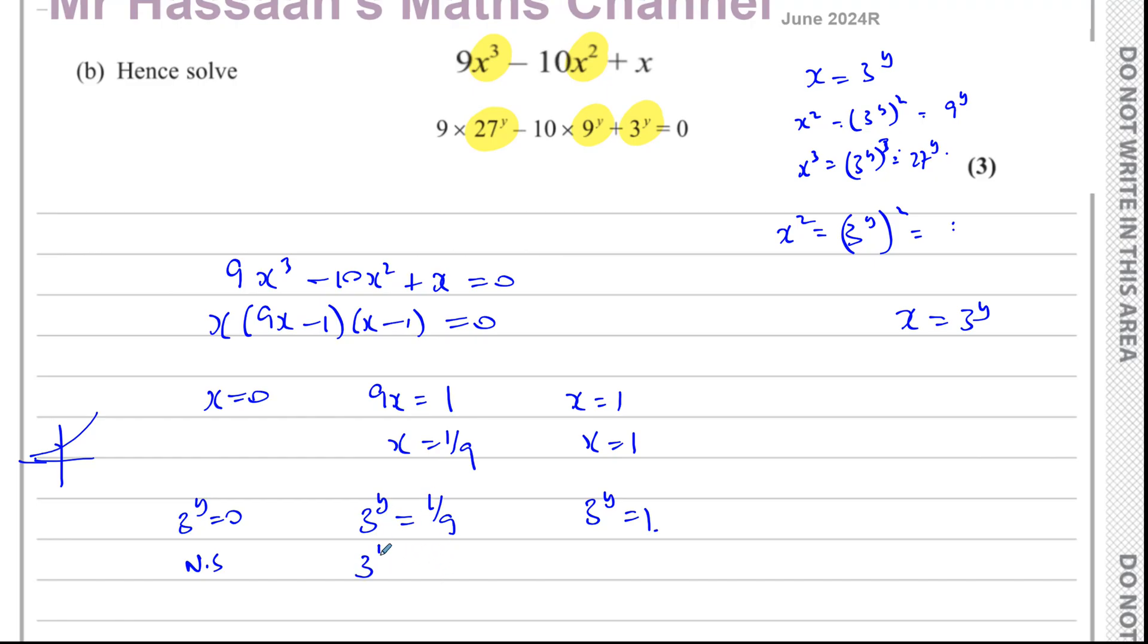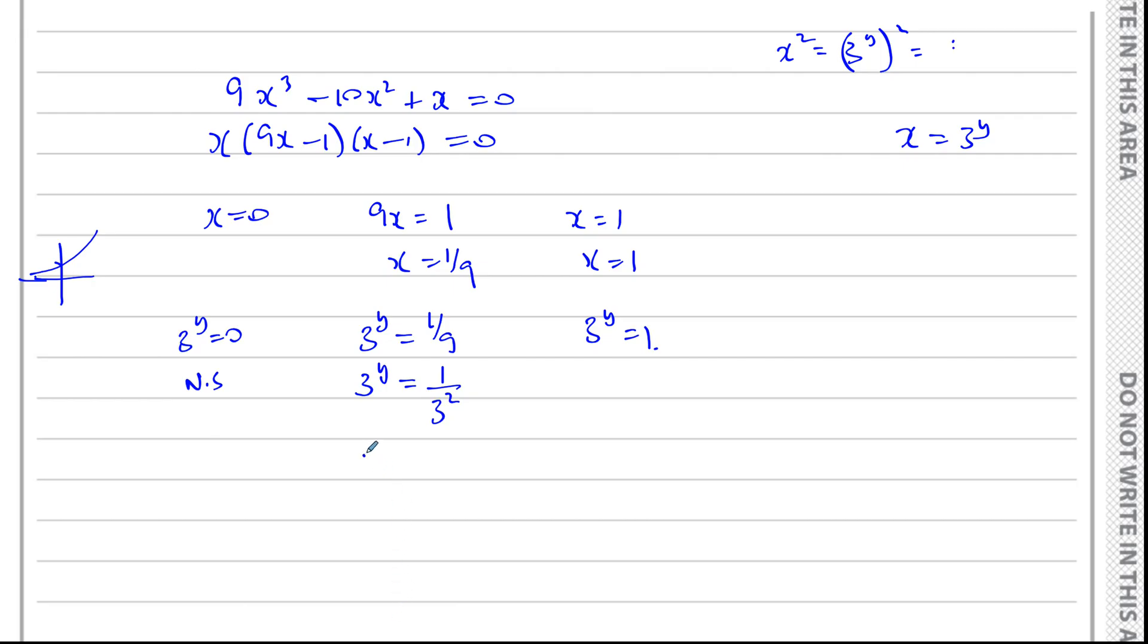And 3 to the power of y equals 1 over 9. We can solve this using exponential equations. We can write this as 3 to the power of y equals 1 over 3 squared. And we know that 1 over 3 squared is the same as 3 to the power of minus 2. So 3 to the power of y equals 3 to the power of minus 2. In which case, y is equal to negative 2. So when you're solving an exponential equation, you should always try to make the bases the same. So 3 and 9, you can see that they can be expressed both as 3 squared or 3 to the power of something. So this is 3 and this is 3 to the power of 2. And we know the laws of indices that 1 over a to the power of m is the same as a to the power of negative m. So that can be 3 to the power of minus 2. And now once the bases are the same, if 3 to the power of y is the same thing as 3 to the power of minus 2, then y must be minus 2. So that's one of our solutions.